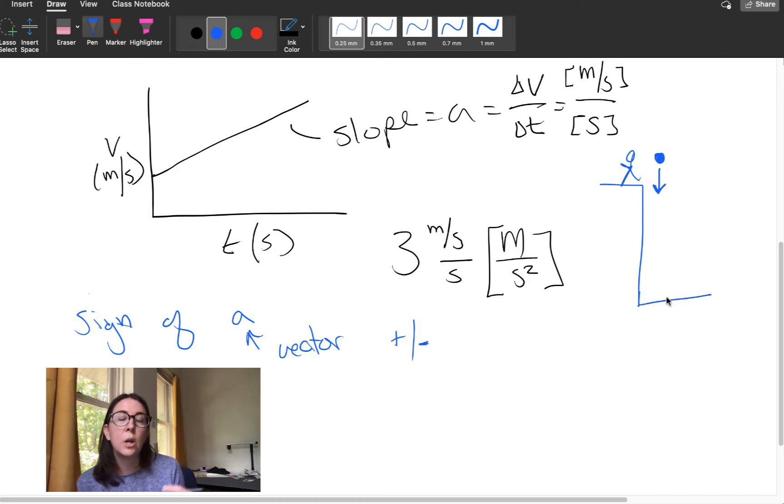Now when we're in physics, we always want to draw our coordinate system, which direction is positive. In this class, I'm going to always make up be positive, unless I have a really good reason to make down be positive.